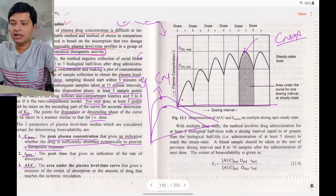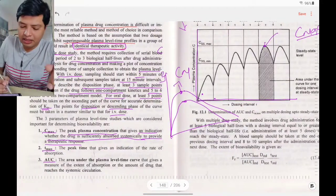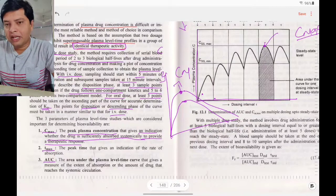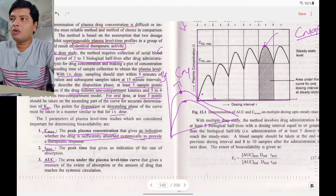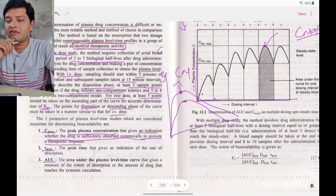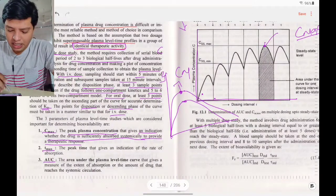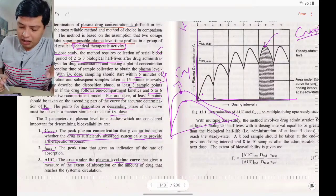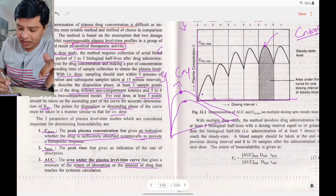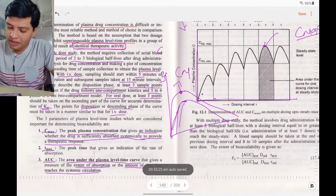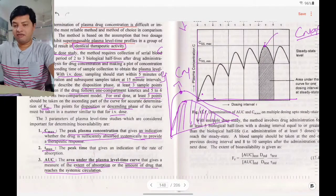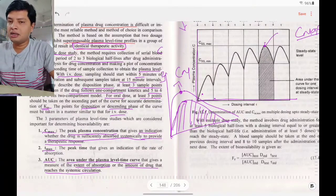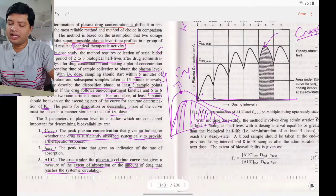Tmax is the time taken to reach maximum concentration. If the time is delayed, there may be a problem in drug absorption or release from the formulation. AUC — area under the plasma level time curve — gives a measure of the extent of absorption, or the amount of drug that reaches the systemic circulation. Measuring the area under the curve tells us the total drug exposure.